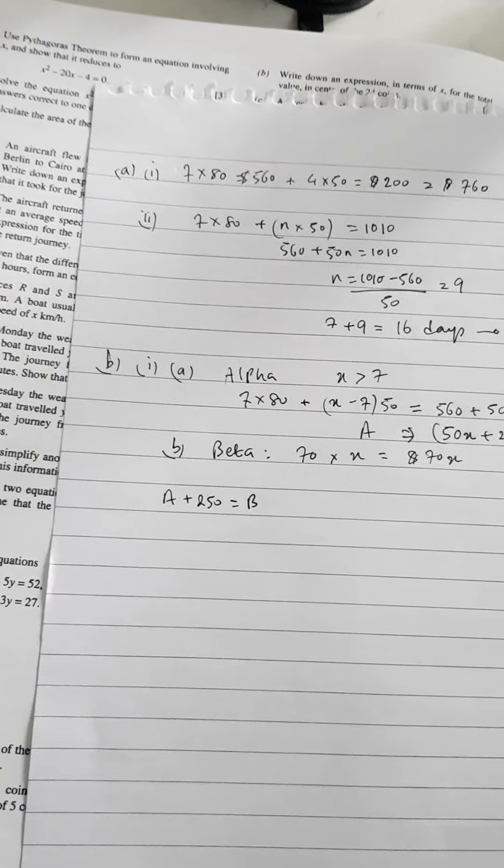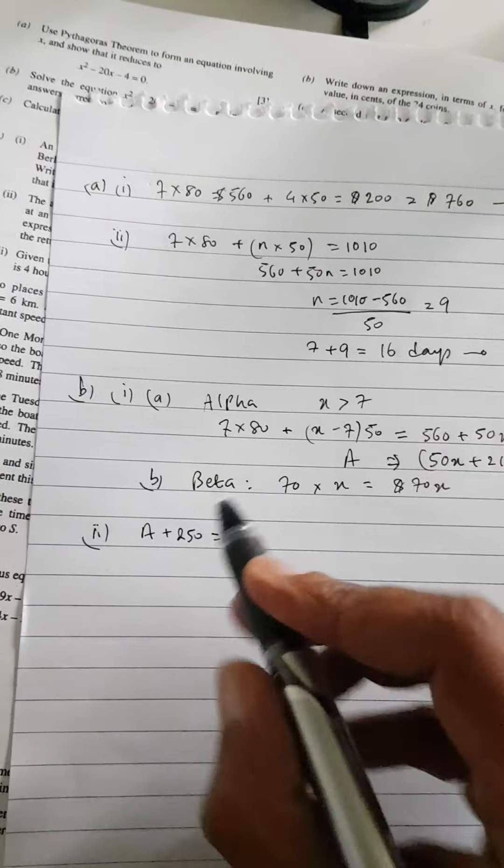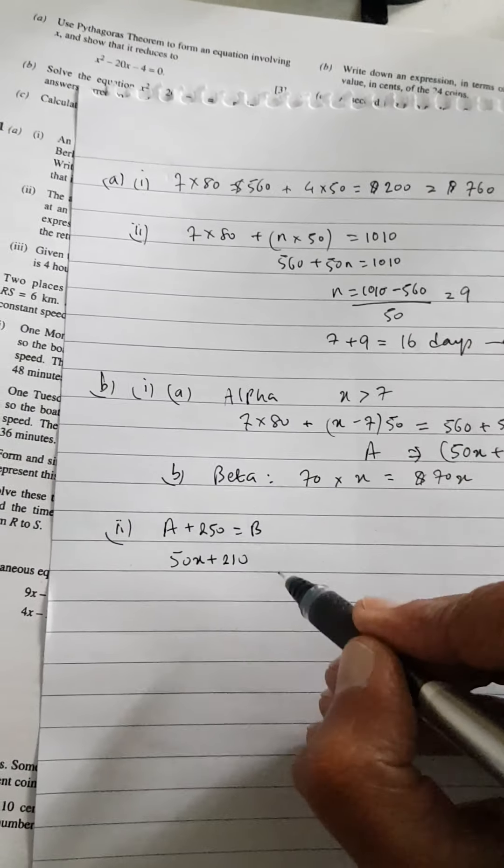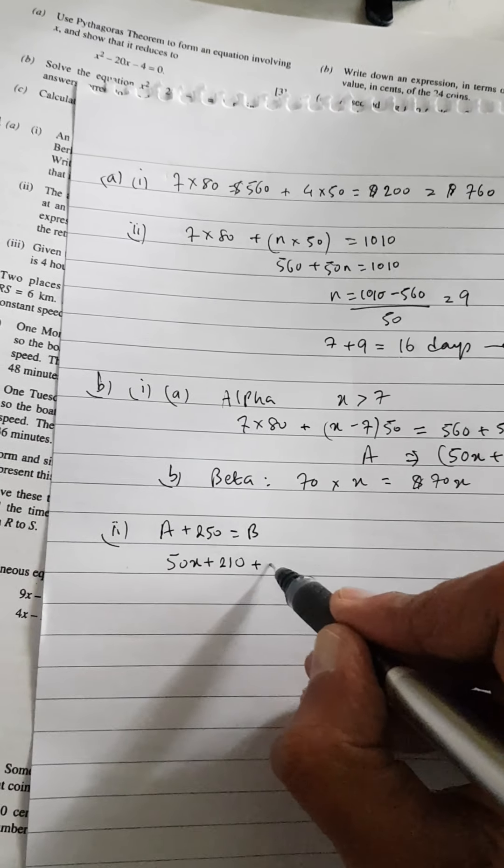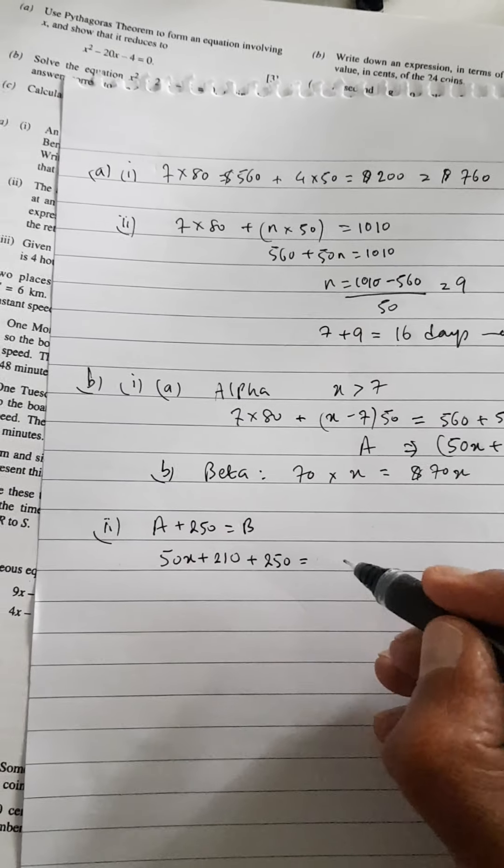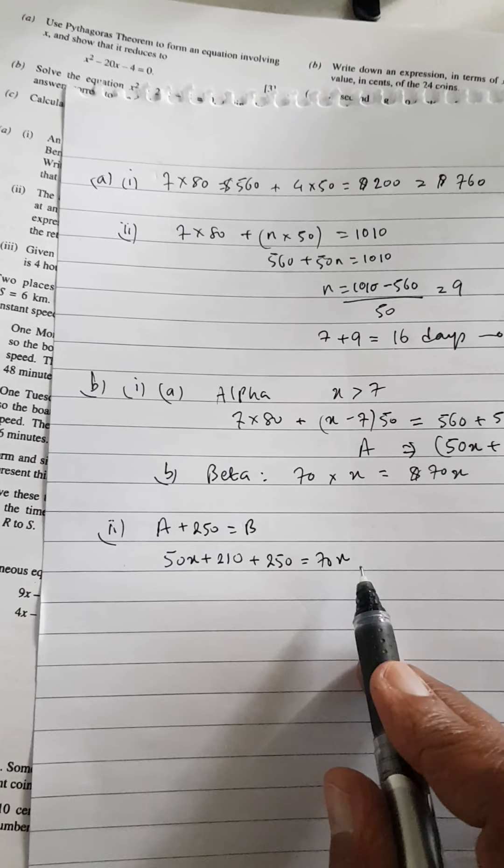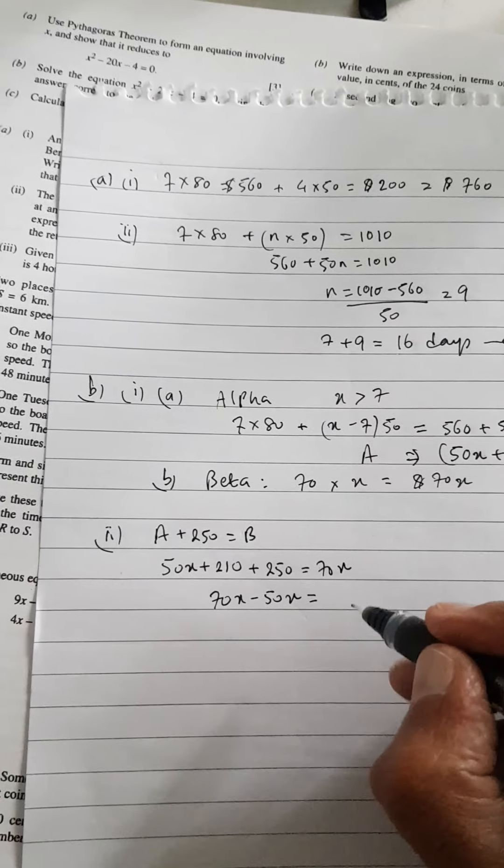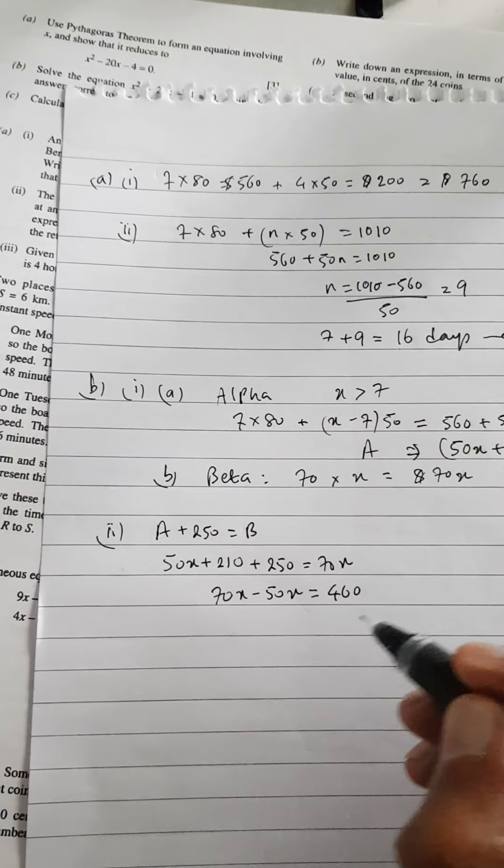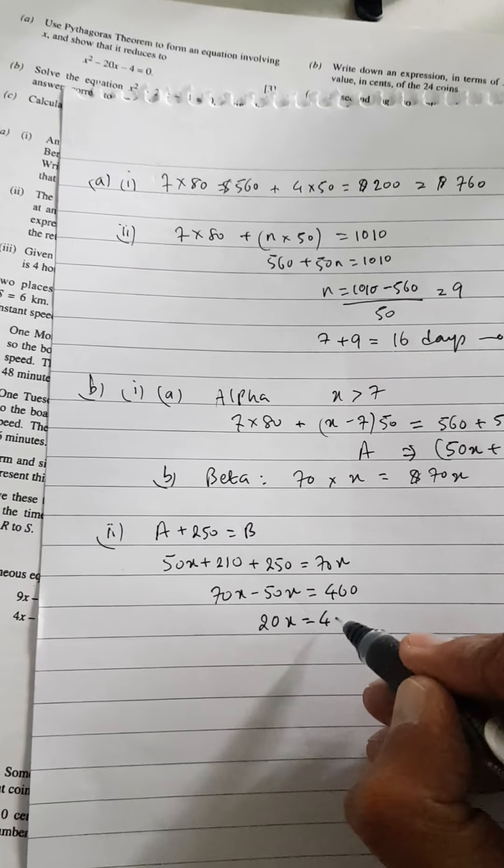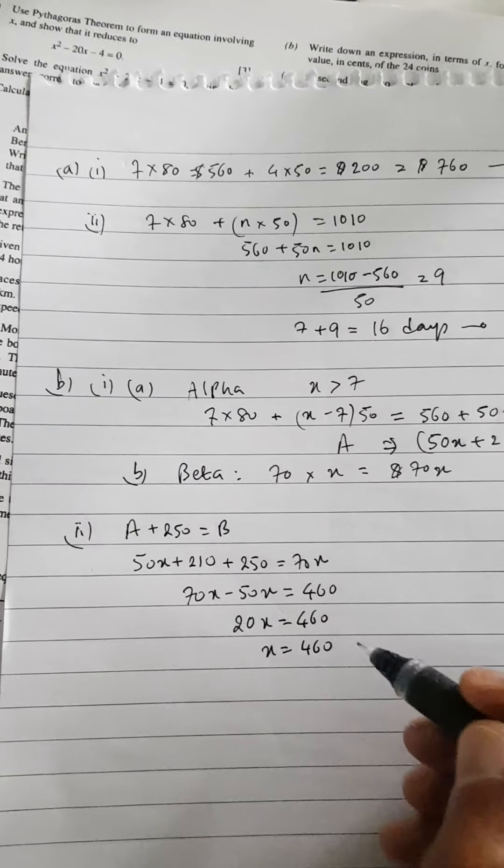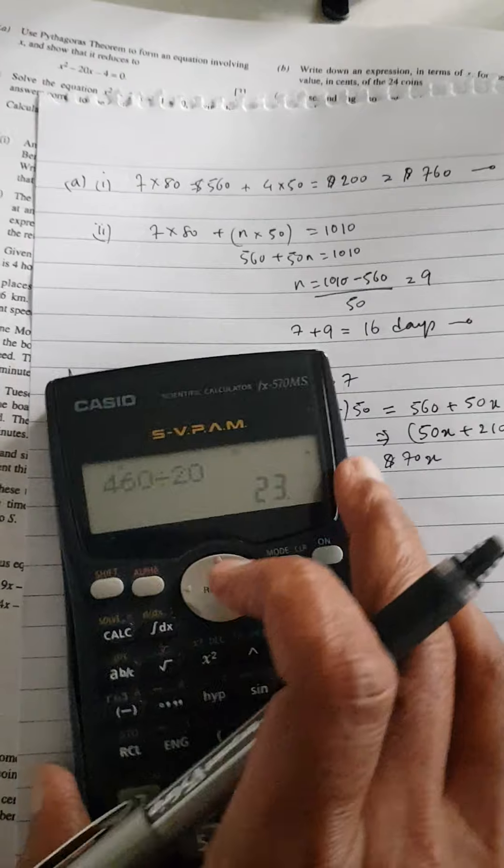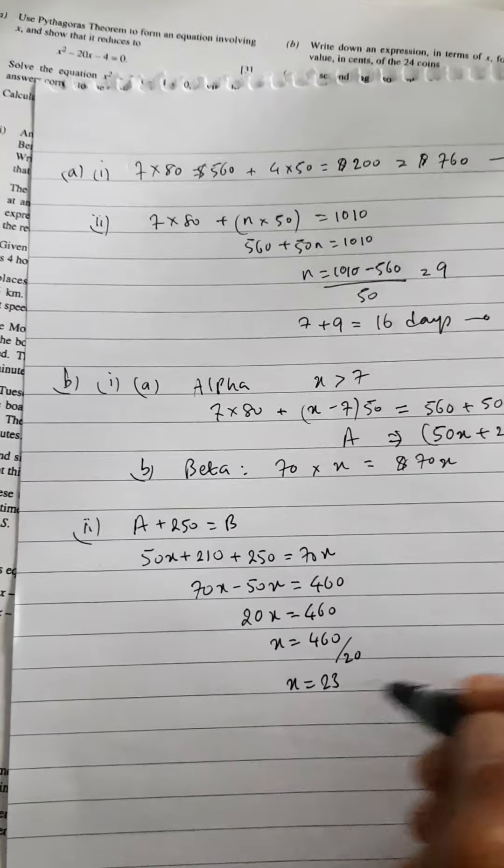This is part B, second part. So what was the charge by Alpha for X number of days? It was 50X plus 210. Then, plus the 250. Then all of that should be equal to Beta, 70X. The 50X can go on the other side. It becomes 70 minus 50X. And these two add up together, it's going to be equal to 460. So we've got 20X is equal to 460. So X is equal to 460 divided by 20. So it should be 23. Yeah, 23 days. So that means X is equal to 23.